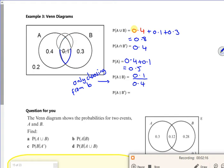So A given not B means I'm only choosing from not B. Not B is 0.6, since B is 0.4.